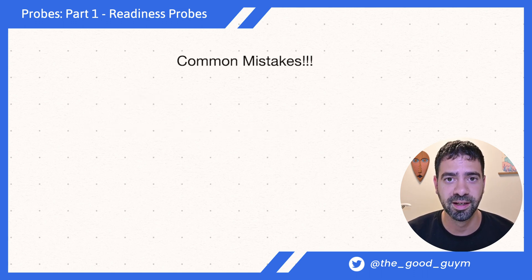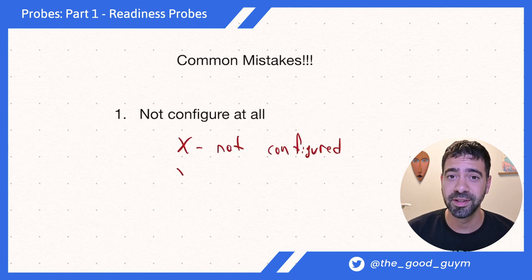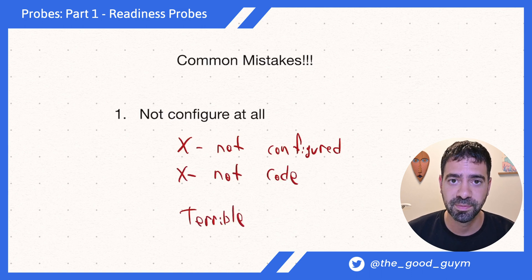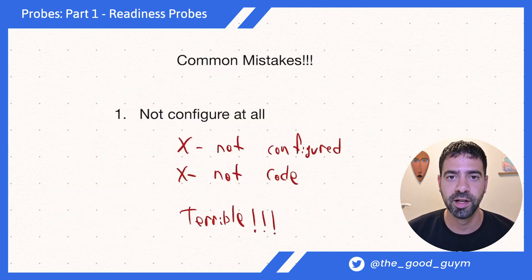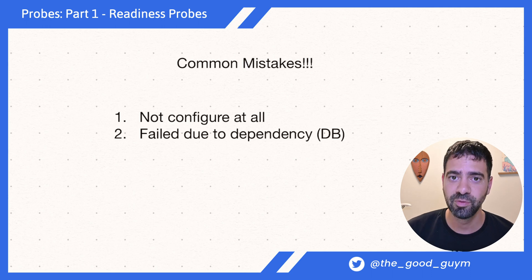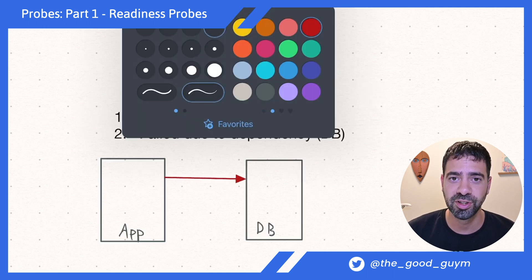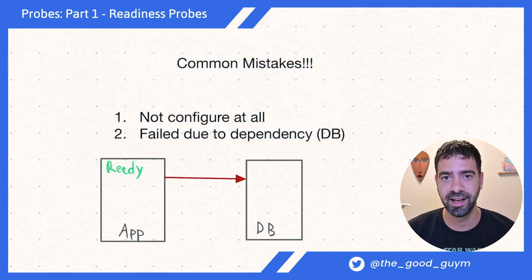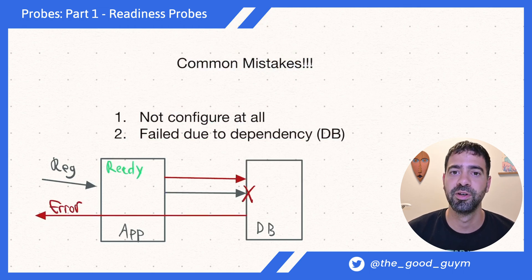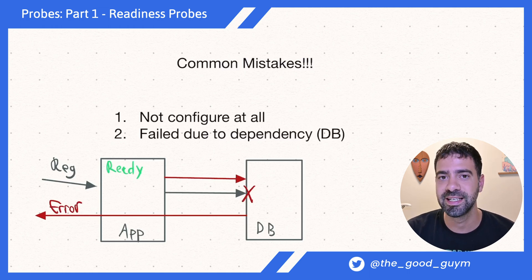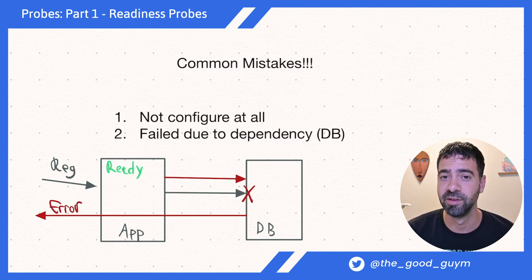What are the common mistakes when configuring readiness probes? First, some people do not configure them in the manifest and also do not code them in their applications — that's a terrible mistake. You want to make sure you have a readiness probe in any of your pods or deployments. The second very common mistake is not failing when underlying infrastructure fails. For example, if your application relies on a database connection and the database is down, your application cannot do its work — so please fail in your readiness probe whenever your underlying database, queue, or whatever service you're using fails. Make sure you configure it, code it, and make it a proper reflection of your application status.